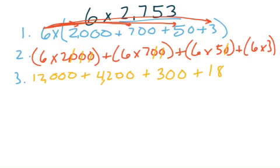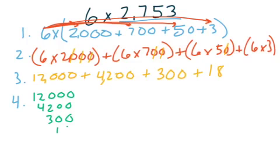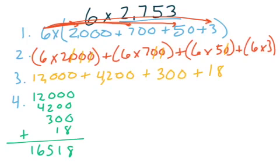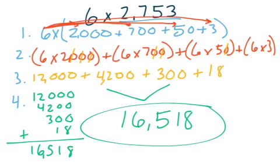Now my final step, step number four, is to add. It's super important that we make sure we line all of our digits up. Twelve thousand, four thousand two hundred, three hundred, eighteen. Notice all of my digits are lined up nicely, starting with my ones place, so that I can add down: eight, one, five, six, one. Sixteen thousand, five hundred eighteen is my final answer.